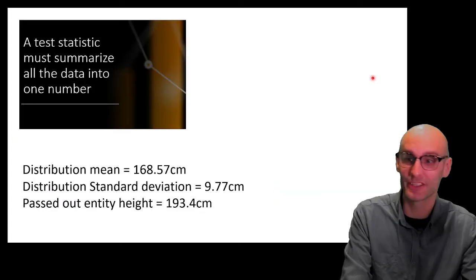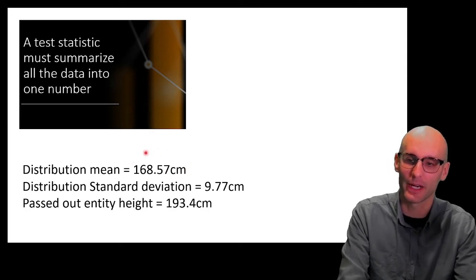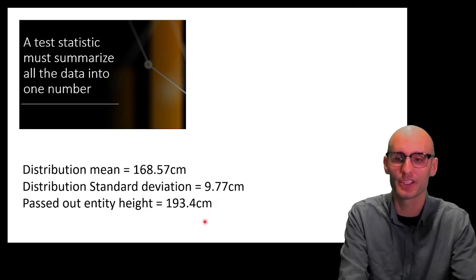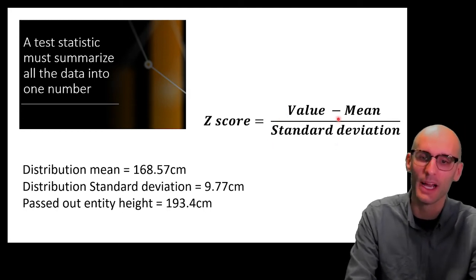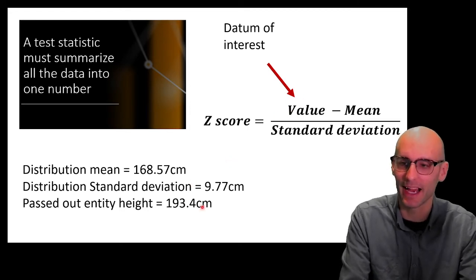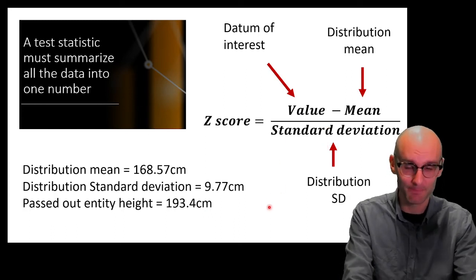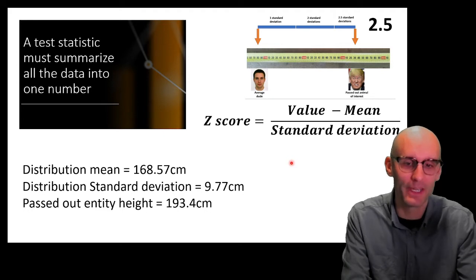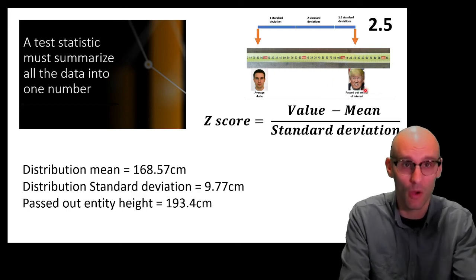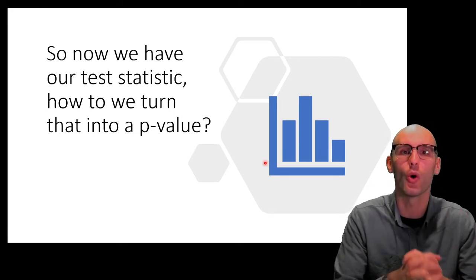In many respects, you can already see we've boiled all this data down to a single number, because this incorporates the mean, the passed-out animal's height, and the standard deviation — all boiled down into just the single number 2.5. This is our Z-score. Here is the formula: the value minus the mean, divided by the standard deviation. The datum of interest is our passed-out entity's height, minus the distribution mean, divided by the distribution standard deviation. This formula is just counting the number of standard deviations between the mean and the data of interest, which is 2.5.